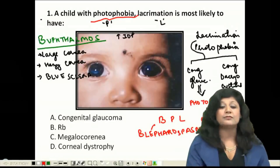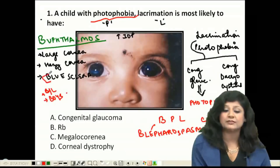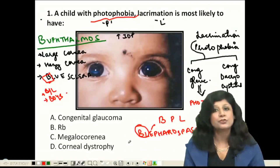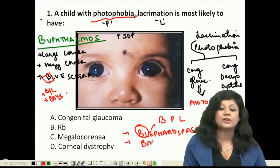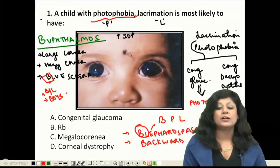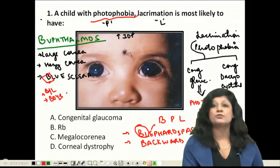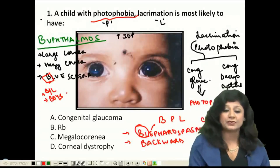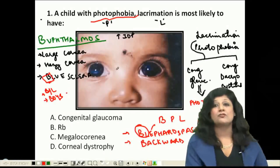For a quick revision: B for buphthalmos is also B for bilateral, B for boys — it's more common in boys — B for blue sclera, B for blepharospasm, and B for backward subluxation of the lens. So this child presenting with photophobia and lacrimation has buphthalmos, with bilateral involvement, large cornea, hazy cornea, blue sclera, and backward subluxation of the lens.